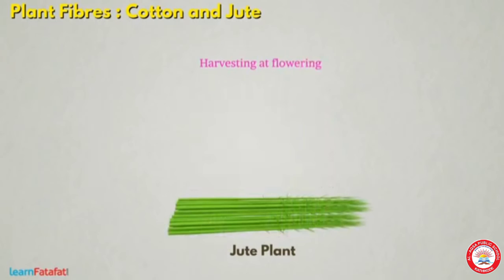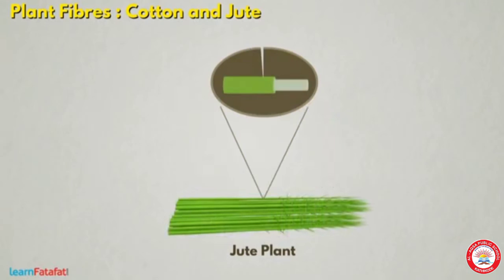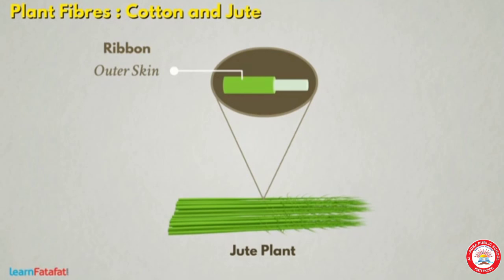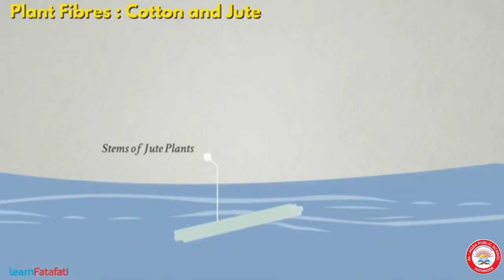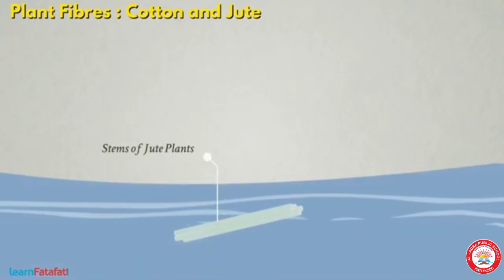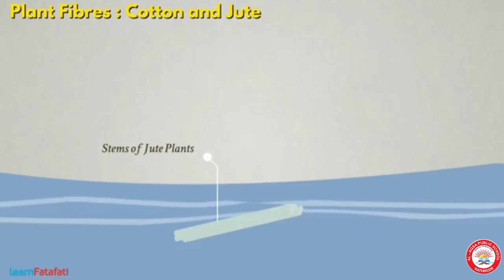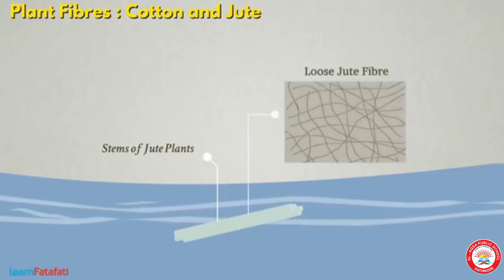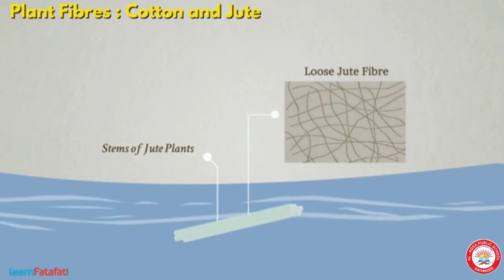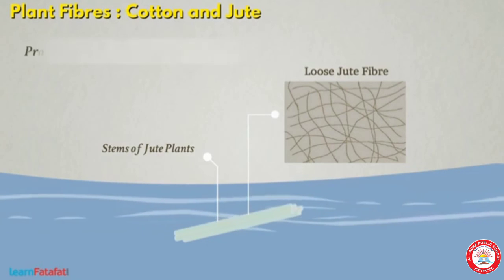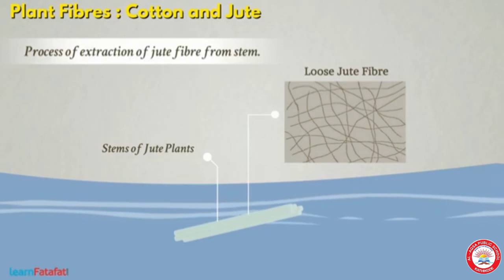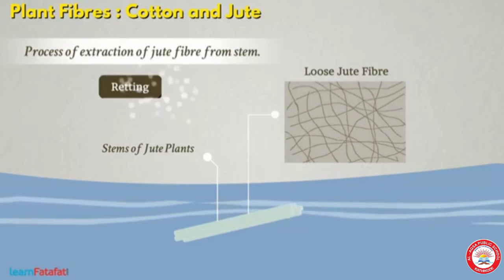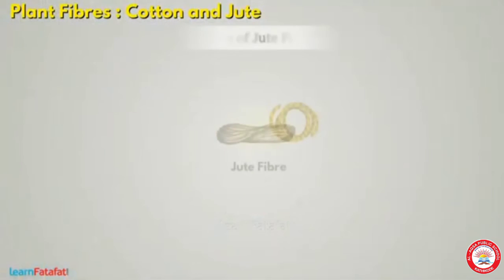Cultivation is done during the rainy season and harvesting at the flowering season. Stems of the harvested plants are immersed in water for a few days. The stems rot and fibers are separated by hand. It is easy to separate jute fiber from the rotten stem. The process of extraction of jute fiber from the stem is called retting.